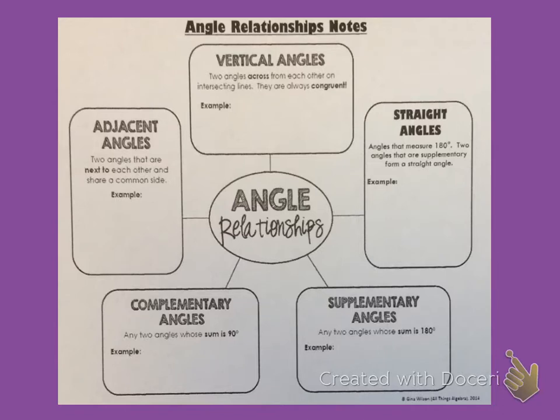Let's start with adjacent angles. Adjacent angles are two angles that are next to each other and share a common side. This pair of angles that I've drawn, you can see, are right next to each other. They share a common side. This means they are adjacent angles.